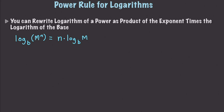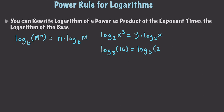Let me show you some examples. Log of 2x to the third, using the power rule, translates into 3 times log of 2x. Likewise, if we had log base 3 of 16, that translates into log base 3 of 2 to the power of 4, which then translates into 4 times log base 3 of 2. This is extremely important because it allows us to solve exponential equations in which we cannot equate the bases.